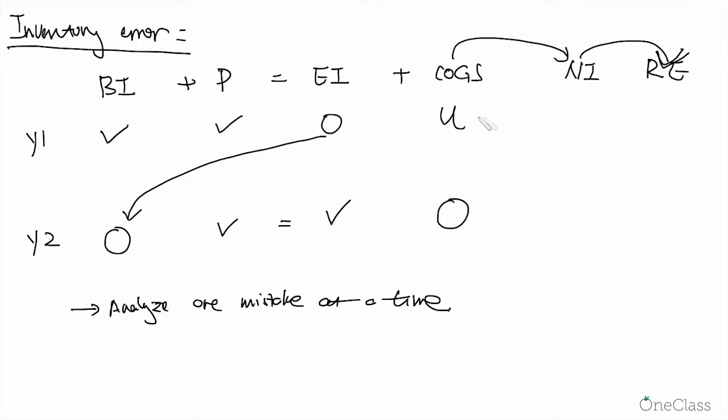And then let's also look at the net income. In year one, our cost of goods sold is understated. So the expense is understated. So our income is overstated because the cost of goods sold and net income has the inverse relationship.